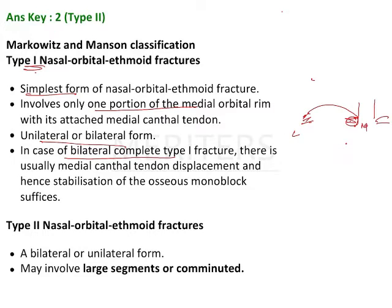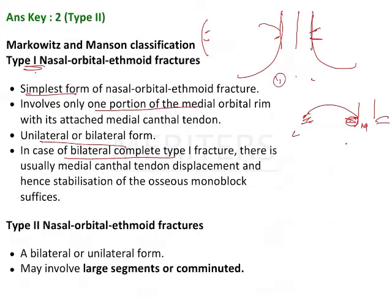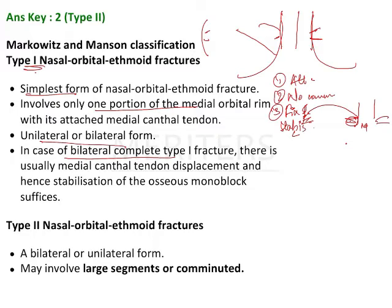In summary, a Type 1 fracture: the nasal bone forms a part of the orbit and the medial canthal ligament attaches to the nasal bone while the lateral attaches to the lateral wall of the orbit. Key features: first, the medial canthal ligament attachment is intact; second, there is only one fracture line — it is not comminuted; and third, fixation and stabilization is possible.